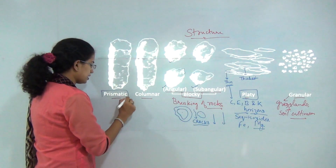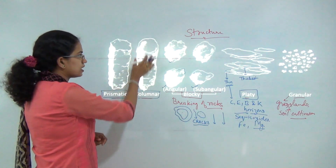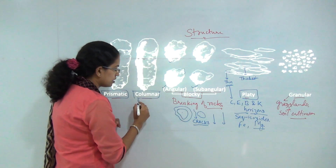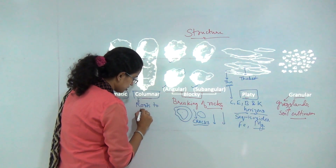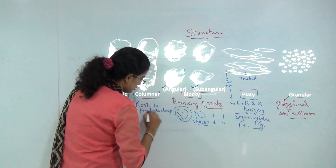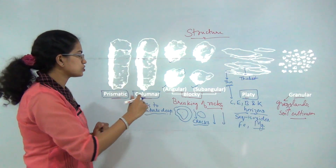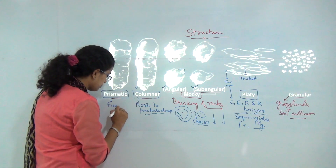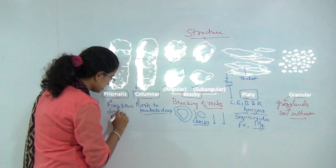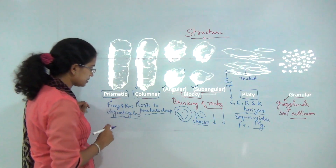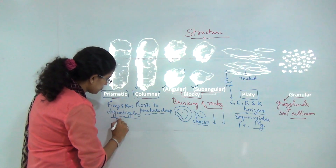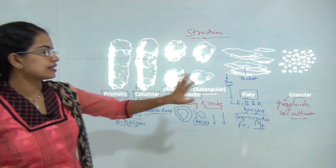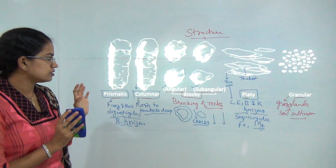The next two are prismatic and columnar. Columnar soils form vertical columns that are so tightly packed that it is very difficult for roots to penetrate deep into the soil. Prismatic soil is characterized by a freeze-thaw action or dry-and-wet cycle, and is commonly found in the B horizon. Prismatic and granular are the most commonly found soil types based on structure.